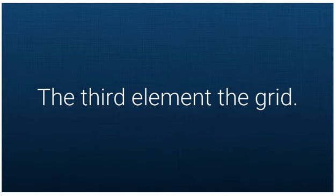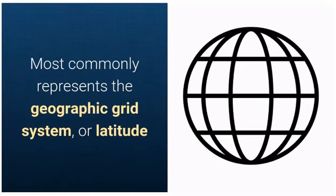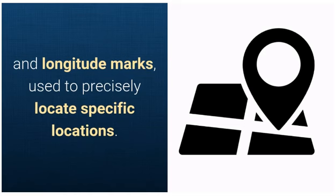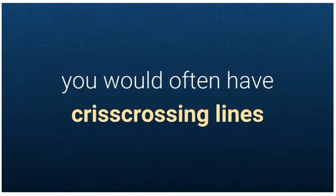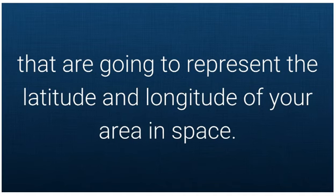The third element is the Grid. Most commonly represents the geographic grid system, or latitude and longitude marks, used to precisely locate specific locations. On a big map, or a map of an actual place, you would often have criss-crossing lines that are going to represent the latitude and longitude of your area in space.